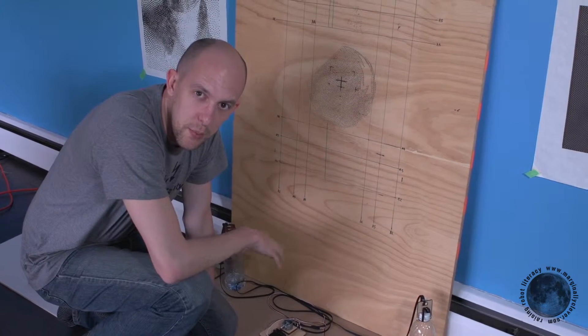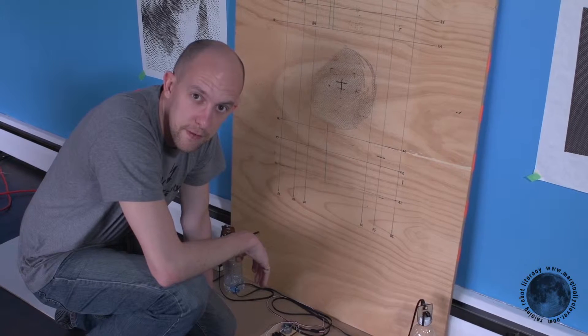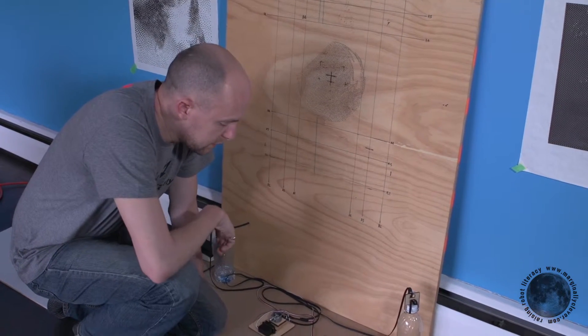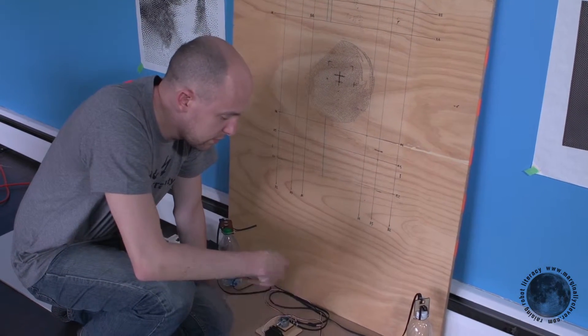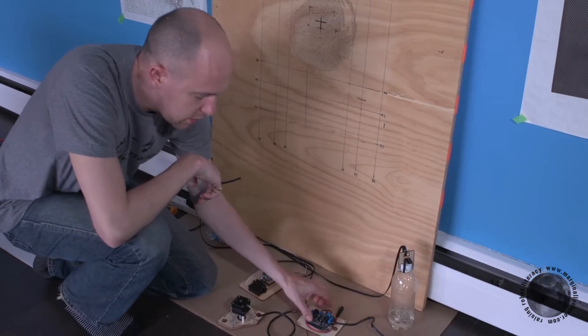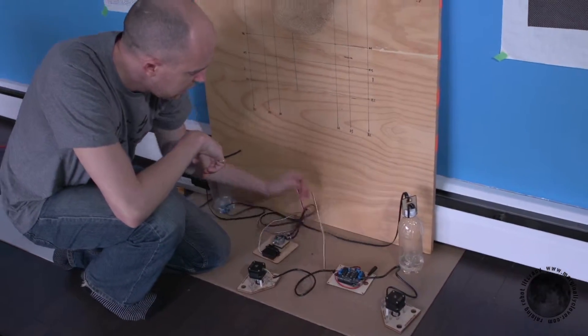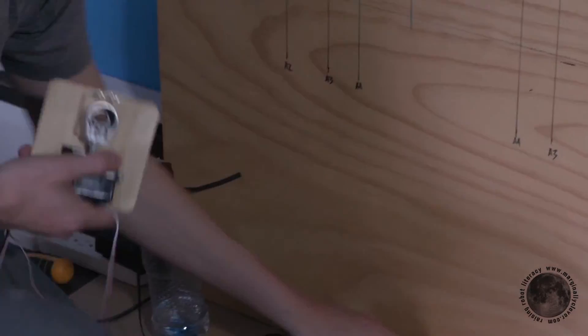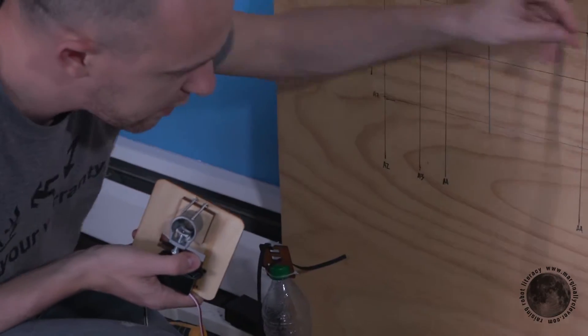Dan at Marginally Clever here. We're putting together a Michelangelo 2.5.2 and in an earlier part of this video we put our motor mounts onto our control board, assembled our pin holder, and prepared our counterweights on the wood.